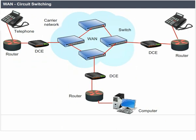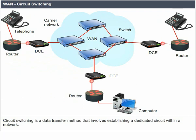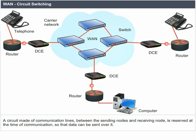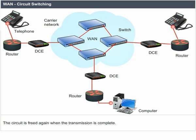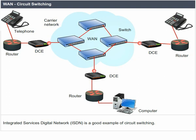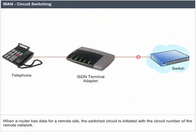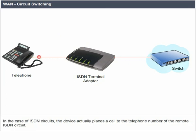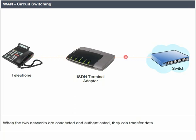WAN Circuit Switching. Circuit switching is a data transfer method that involves establishing a dedicated circuit within a network. A circuit made of communication lines between the sending and receiving nodes is reserved at the time of communication so that data can be sent over it. The circuit is freed again when transmission is complete. ISDN (Integrated Services Digital Network) is a good example of circuit switching. When a router has data for a remote site, the switched circuit is initiated with the circuit number of the remote network. In the case of ISDN, the device places a call to the telephone number of the remote ISDN circuit. When the two networks are connected and authenticated, they can transfer data, and the call is terminated when complete.